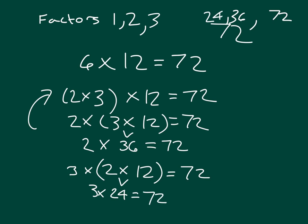So that 3 times 24 does give us 72. So we have 1, 2, 3, and then we have 24, 36, and 72.